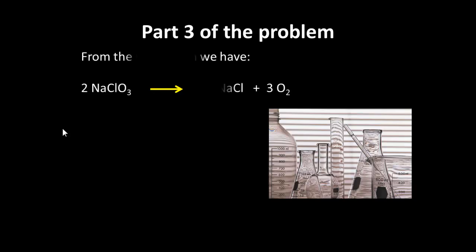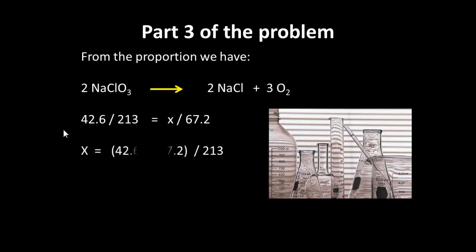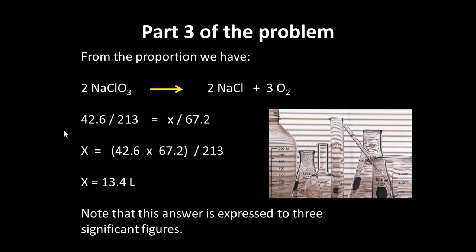We're almost at the end of this problem, so let's look at it in terms of proportion. We know that we are dealing with 42.6 grams of sodium chlorate, and we know that we will get x liters of oxygen. If we use 213 grams of sodium chlorate, we'll get 67.2 liters of oxygen. So 42.6 over 213 equals x over 67.2. Solving for x: it's 42.6 times 67.2 divided by 213, which gives us 13.4 liters.